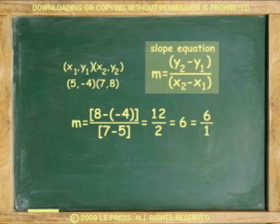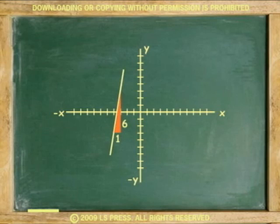Solving the equation: 8 minus negative 4 equals 12 over 7 minus 5 equals 2. 12 divided by 2 equals 6. The slope is 6. Every time y changes 6, x changes 1. A very steep line.